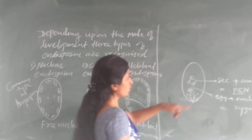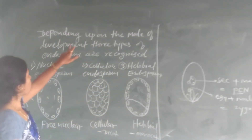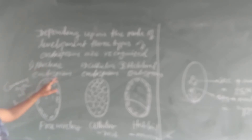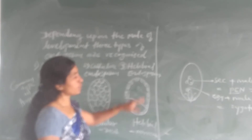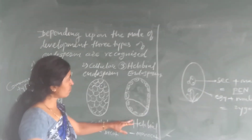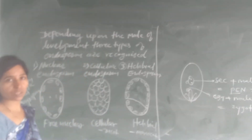Now, how is this endosperm formed? Depending upon the mode of development, three types of endosperms are recognized. The most common type is nuclear endosperm, which occurs most commonly in angiosperm plants. Then there is cellular endosperm, which occurs mostly in type-one plants. And helobial endosperm, the third type, which occurs in monocots.